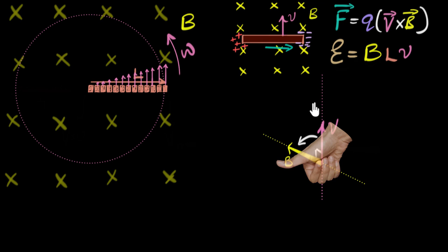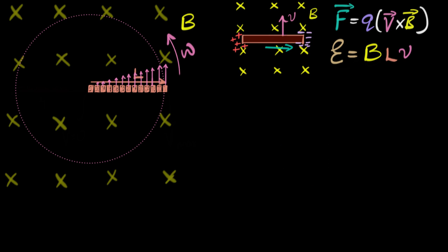It'll be a great idea to pause and see if you can set up that integral yourself. The whole idea behind setting up the integral is that because different pieces have different potential differences generated, we concentrate on one infinitesimal piece, find how much potential difference that tiny piece generates, and then integrate it.